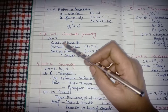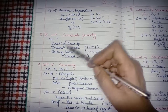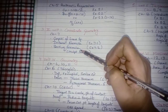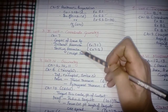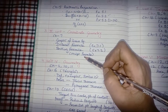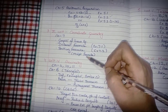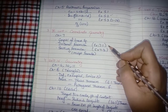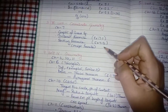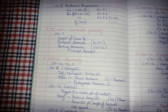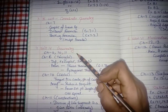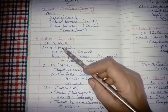Unit 3 is Coordinate Geometry. Prepare graph of linear equations, distance formula, and section formula - since midpoint is derived from the section formula, prepare that too. This means do exercises 7.1 and 7.2. Exercise 7.3 (area of triangle) is not required.